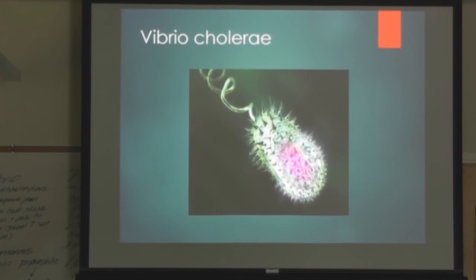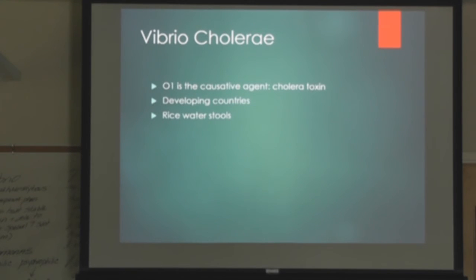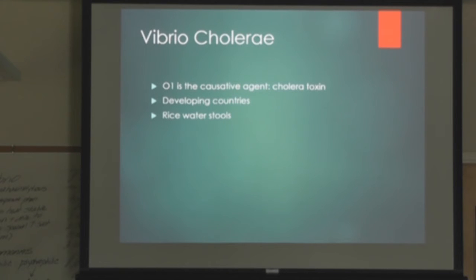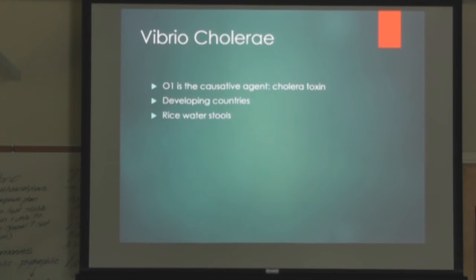Vibrio cholerae O1 is the actual cholera toxin, a problem in developing countries. It's prevalent in India and Bangladesh — acute diarrheal disease spread through contaminated water. When you have a tsunami and that type of thing, that's when you have a real big problem with secondary cholera infections. It's severe gastroenteritis with vomiting and rice water stools.